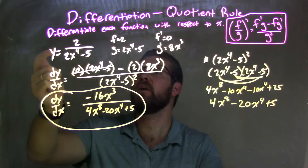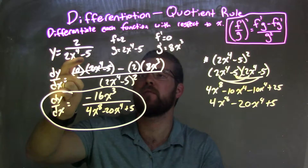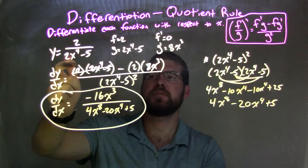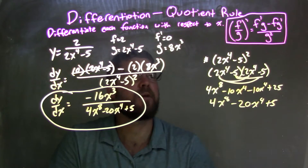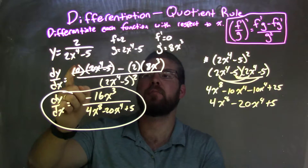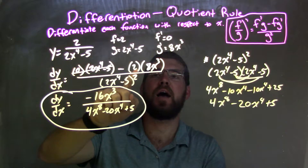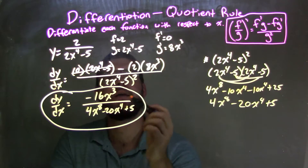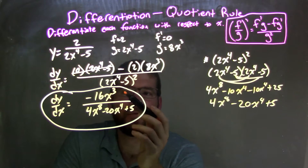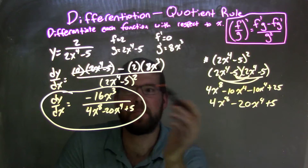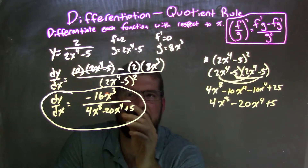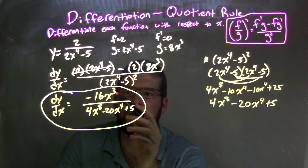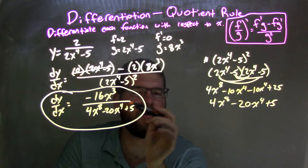So let's recap. We're given y equals 2 over 2x to the 4th minus 5. I labeled the top f and the bottom g — two different functions. I then found f prime and g prime. I then applied the quotient rule: f prime g minus f g prime, all over g squared. I filled in my spots, then simplified — multiplying out the denominator. There was nothing else to simplify, so the final answer is dy/dx equals negative 16x to the 3rd over 4x to the 8th minus 20x to the 4th plus 5.